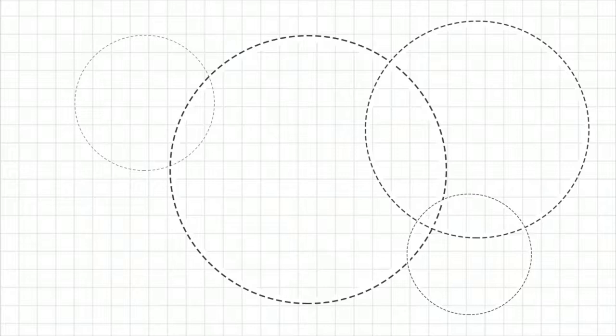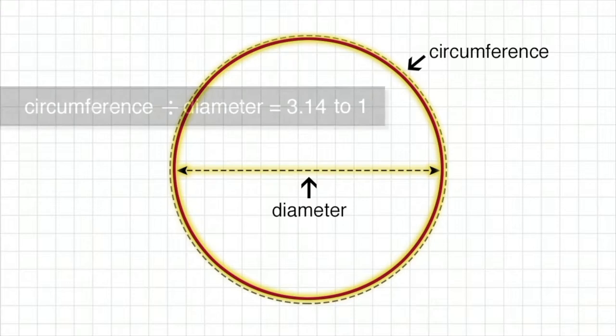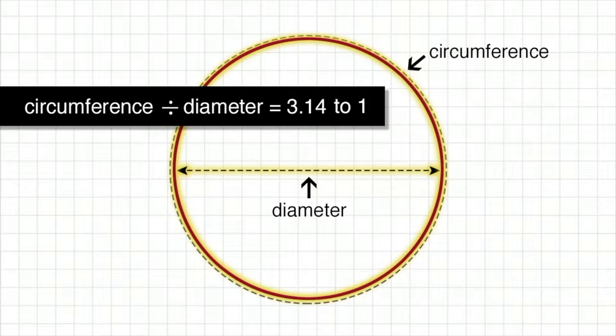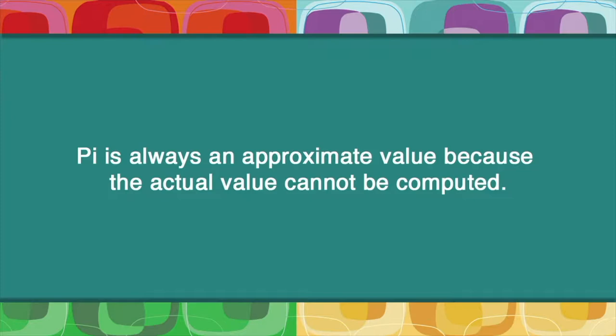Whatever the size of the circle, these two quantities always have the same ratio. If you divide the circumference by the diameter, you get a ratio of about 3.14 to 1, which is the famous number pi.